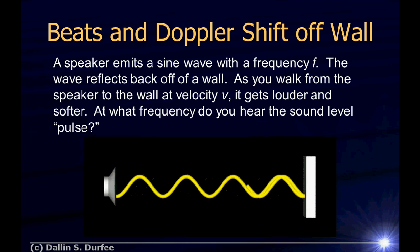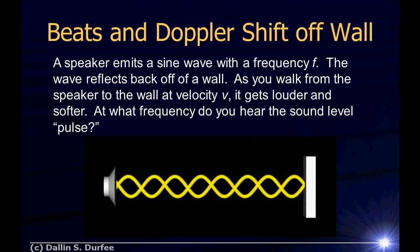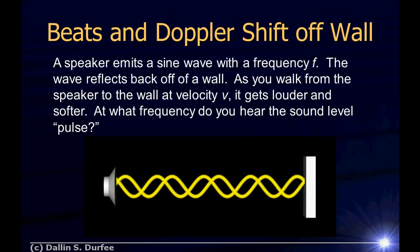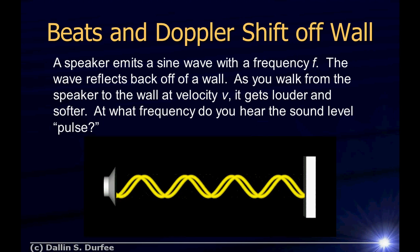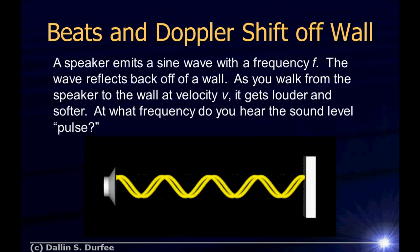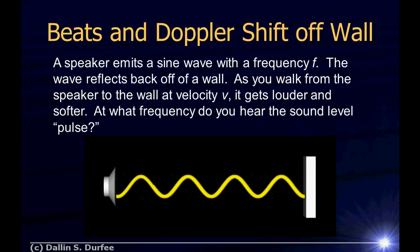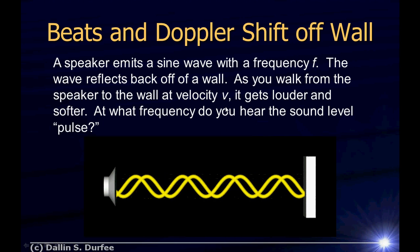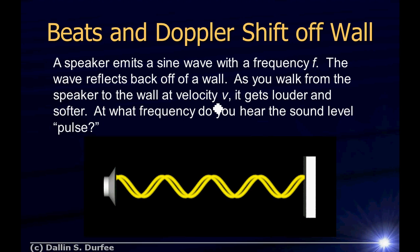But for now, I want to end off with a cool problem that kind of applies beating to do something interesting. So this is a problem you can solve two different ways. A speaker emits a sine wave with a frequency f. The wave reflects back off of a wall. As you walk from the speaker to the wall at a velocity, let's call it v_w, because we're going to have the speed of sound in here. At velocity v_w, it gets louder and softer. At what frequency do you hear the sound level pulse? At what frequency do you hear it get louder and softer and louder again?